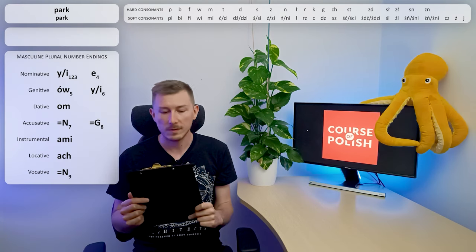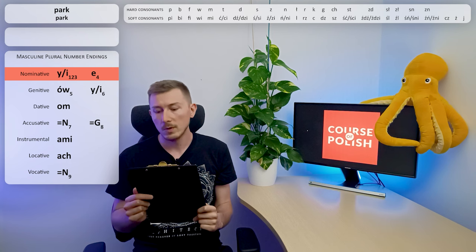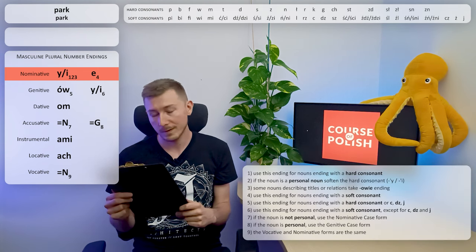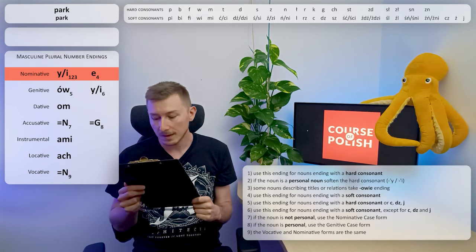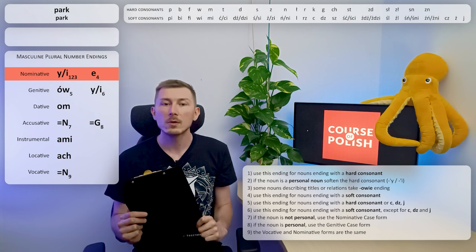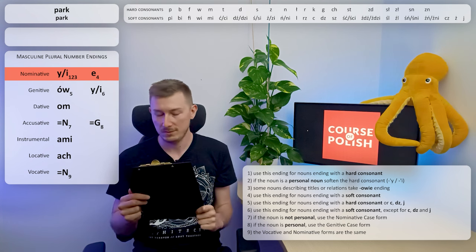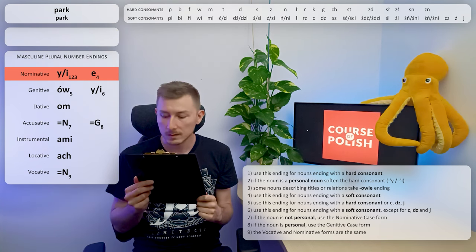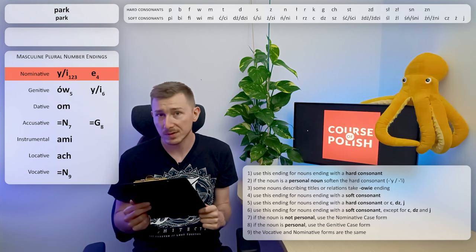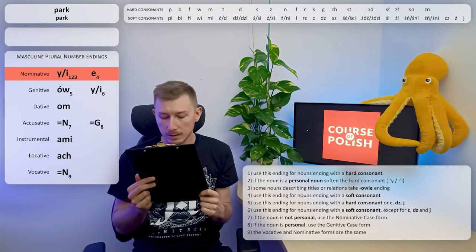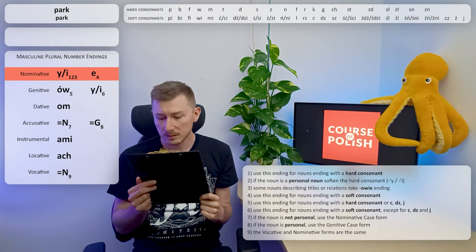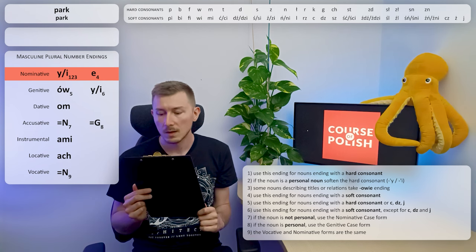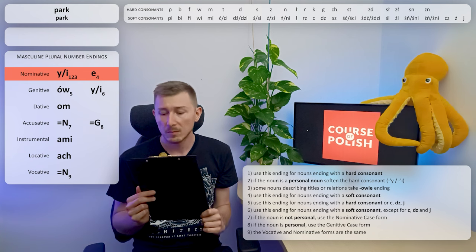Let's start with the plural number. The first, nominative case. We have two options: YI ending or E ending. Let's read the rules for the first ending: use this ending for nouns ending with a hard consonant. We already know that K is a hard consonant, so that's the ending that we have to use. Let's read the other rules. If the noun is a personal noun, soften the hard consonant. PARK definitely is not a person, so we don't have to follow this rule. And the third rule: some nouns describing titles or relations take OV ending. It doesn't matter with PARK noun. So we have to apply the first ending, but there are two options: Y or I.